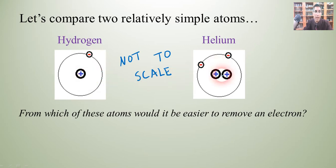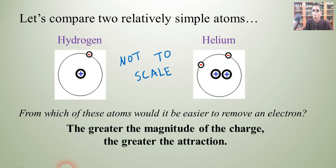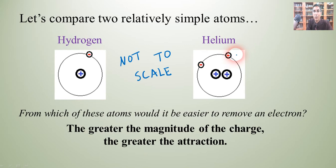Helium has so much more positive charge, so it's a lot harder to take an electron away from helium than from hydrogen. This tells us that the greater the magnitude of the charge, the greater the attraction. Since we have two protons in helium, it's going to be really difficult — almost impossible — to remove an electron from helium using normal chemical means. On the other hand, with just one proton in hydrogen, it's relatively, or at least much easier, to take that electron away.